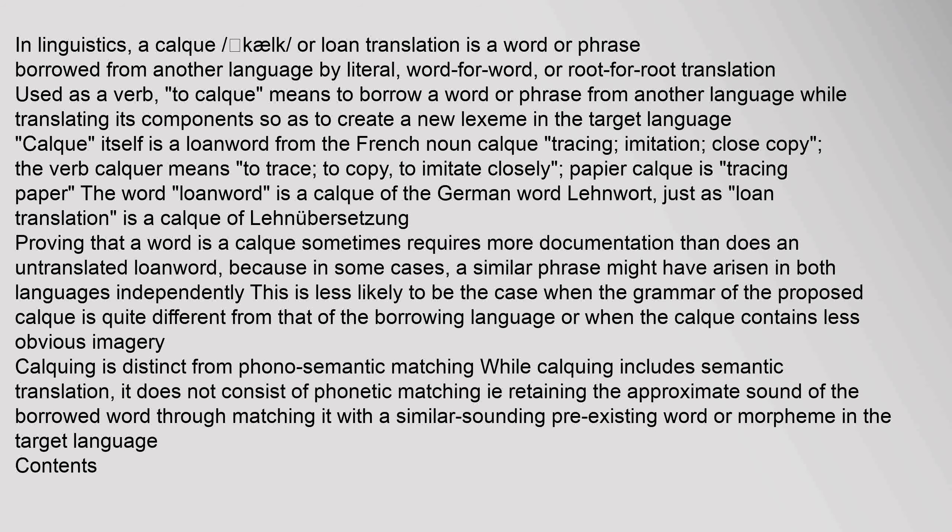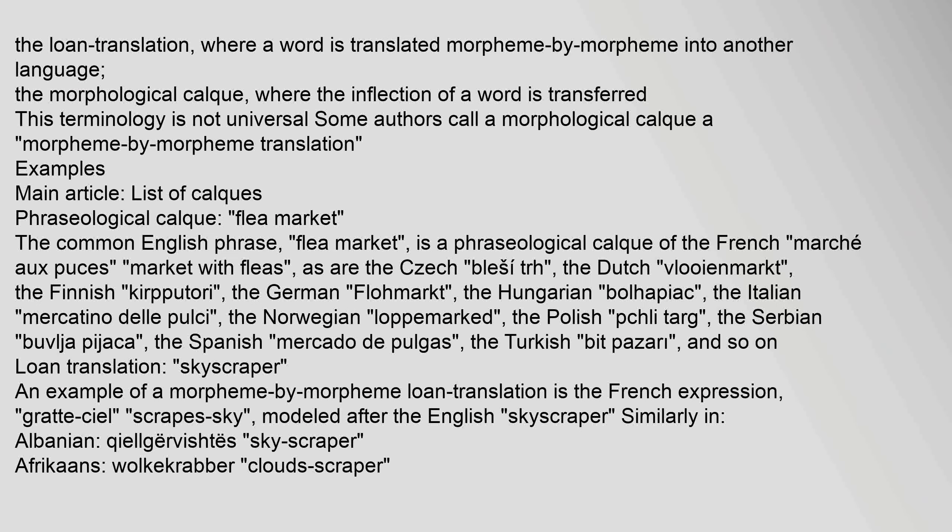Calcing is distinct from phono-semantic matching. While calcing includes semantic translation, it does not consist of phonetic matching — i.e., retaining the approximate sound of the borrowed word through matching it with a similar-sounding pre-existing word or morpheme in the target language. Types include the loan translation, where a word is translated morpheme by morpheme into another language, and the morphological calc, where the inflection of a word is transferred. Some authors call a morphological calc a morpheme-by-morpheme translation.